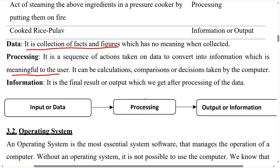What is processing doing? Processing is converting your data into meaningful information. It can be calculations, comparisons, or decisions taken by a computer. So input or data is converted through a process, and after processing, whatever we get is called output or information.